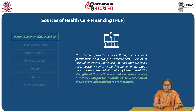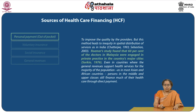Source of healthcare financing one: personal payment or out-of-pocket expenditure. This method provides services through independent practitioners or groups of practitioners — clinics or hospital emergency rooms (in India they are called super-specialty clinics, nursing homes or hospitals). Here providers are responsible directly to the patient. The strengths of this method are that everyone can seek care if they can pay for it, consumers have freedom of choice of providers, and there are incentives to improve quality. However, this method leads to inequity in spatial distribution of services as in India. Romer's study found that 60 percent of the doctors in Malaysia were engaged in private practice in major cities. Sorkin in 1976 found that even in countries where general revenues support health services, persons in the middle and upper classes still finance much of their healthcare through direct payment.